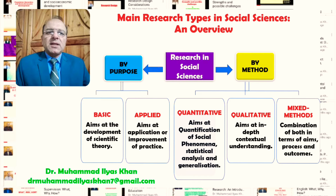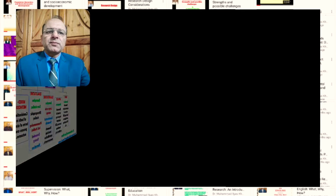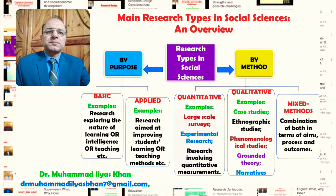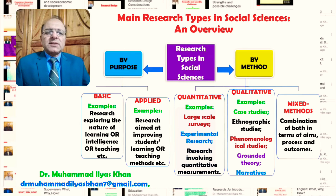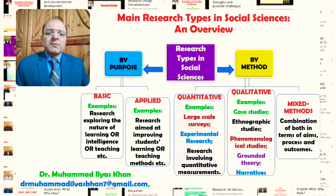As a result, mixed method research goes beyond the paradigms of one or another research type, and its aim is basically a practical and pragmatic approach towards social phenomena. Here are some examples to elaborate on the types of social science research by purpose and by method.